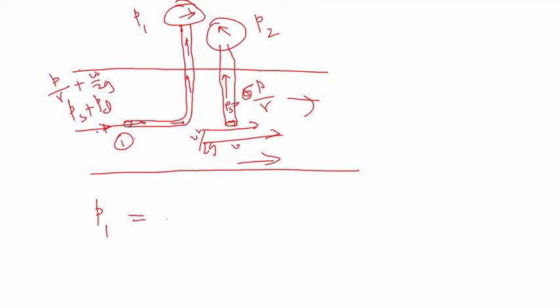And then pressure gauge number 2 will read the pressure head P2 over gamma of the fluid, plus the velocity head at point two, V squared by 2g. So we can simply solve for V squared.